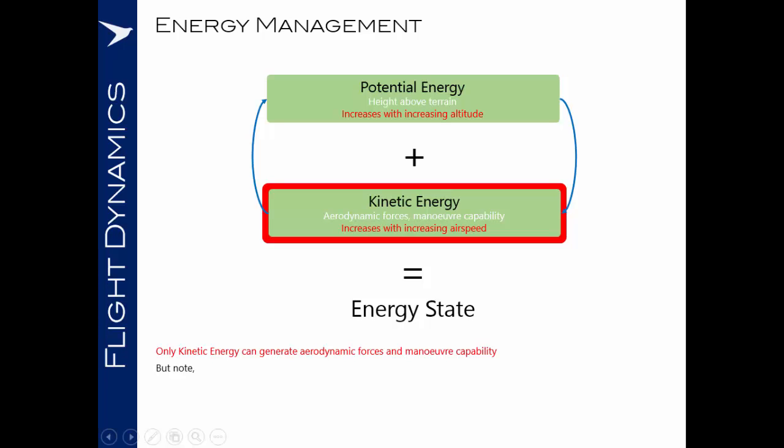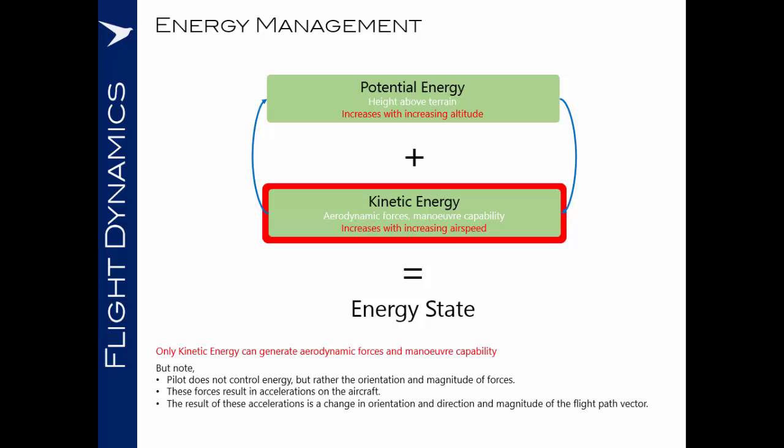Note that the pilot does not control the energy, but rather the orientation and the magnitude of forces on the airplane by maneuver. These forces are a result of accelerations on the aircraft. And the result of those accelerations is a change in orientation and direction and magnitude of the flight path vector.